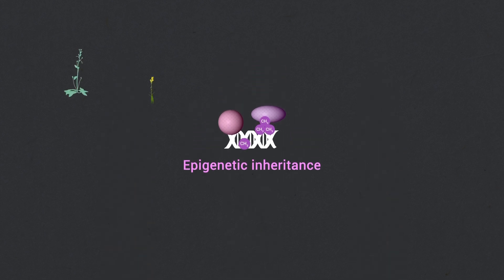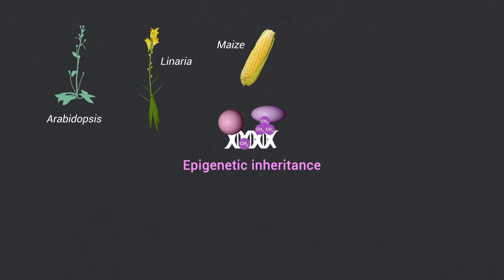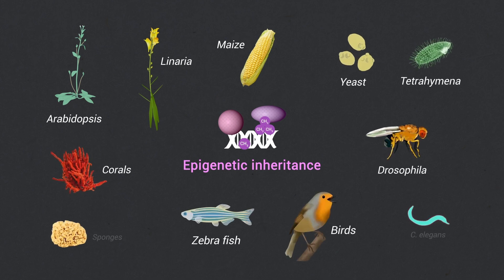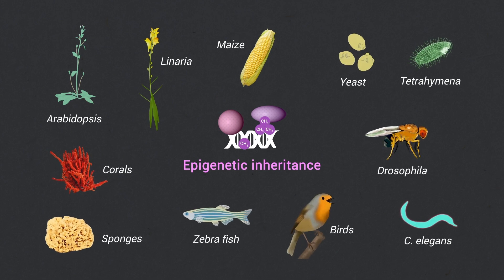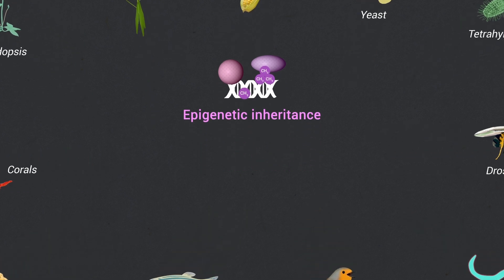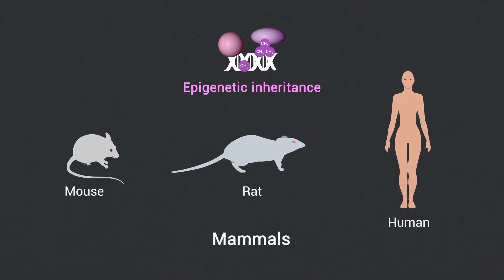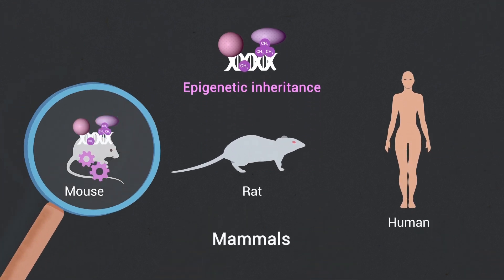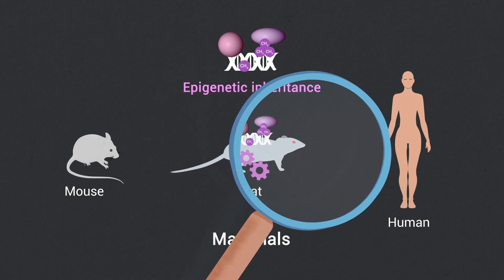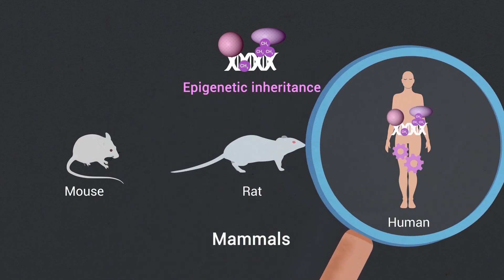Recent work has shown that, in plants, unicellular eukaryotes, and several metazoans, DNA methylation and/or chromatin-mediated transgenerational inheritance does occur. Some evidence has been offered for specific cases in mammals, and future work is needed to understand how widespread this phenomenon might be.